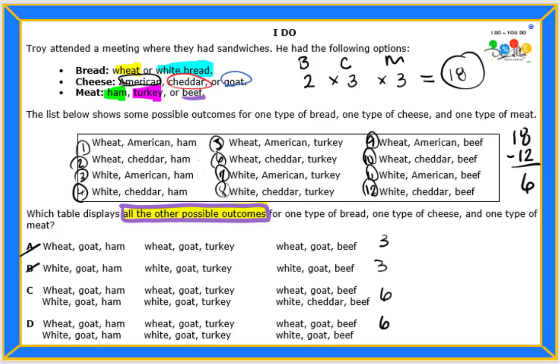Let's look at the list that they have given us and see if we can find what's missing. So we have wheat with American and cheddar, and we have ham. So it looks like we didn't have any goat cheese. Do you see that? We're missing the goat cheese. I'm going to write right here, make myself a little reminder. What about the goat cheese?